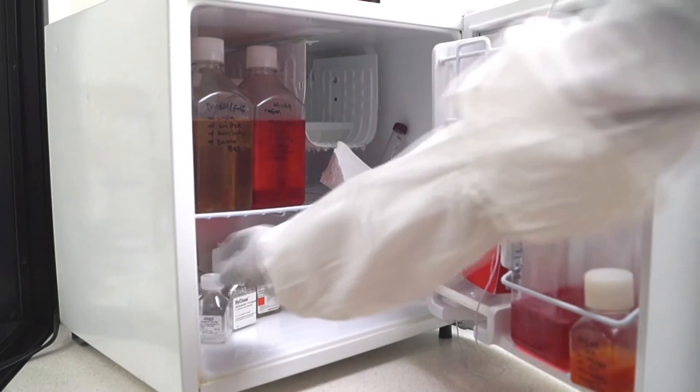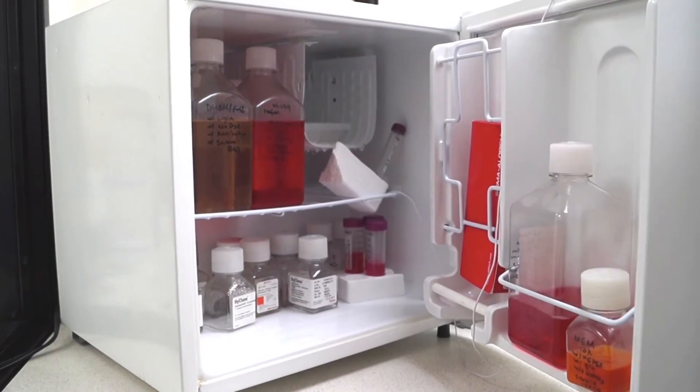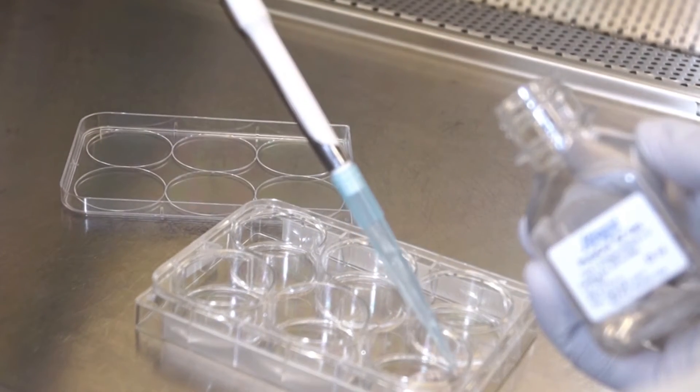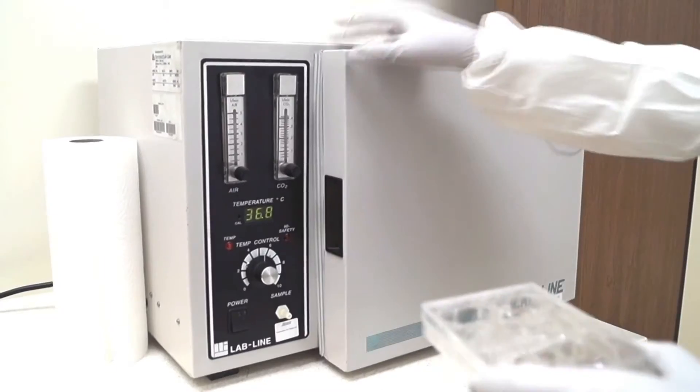To form a 3D gel, first remove the collagen from the refrigerator. Second, dispense the collagen into your desired dish. Third, incubate.